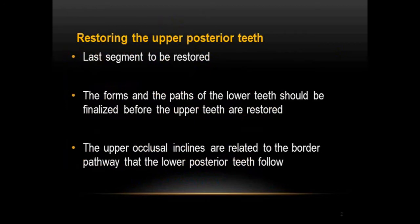The upper posterior teeth is our last segment that needs to be restored. In our previous session we discussed how to restore the lower posterior teeth — how to place the buccal cusp, the lingual cusp, how to give the fossa inclines, lateral ridges and grooves. Based on these lower posterior teeth and the pathways they follow, we are going to set our upper posterior teeth using the functionally generated path technique.